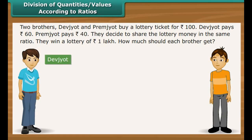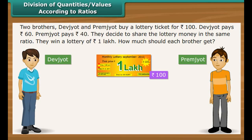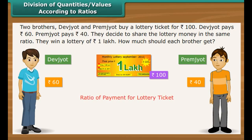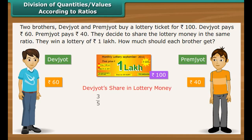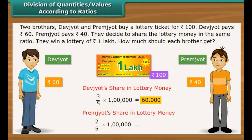Two brothers, Devjoth and Premjoth, buy a lottery ticket for rupees 100. Devjoth pays rupees 60 and Premjoth pays rupees 40. They decide to share the lottery money in the same ratio. They win a lottery of rupees 1 lakh. The ratio of their payments is 3 is to 2. Out of every 5 rupees won, 3 go to Devjoth and 2 go to Premjoth. Devjoth's share is Rs. 60,000 and Premjoth's share is Rs. 40,000.